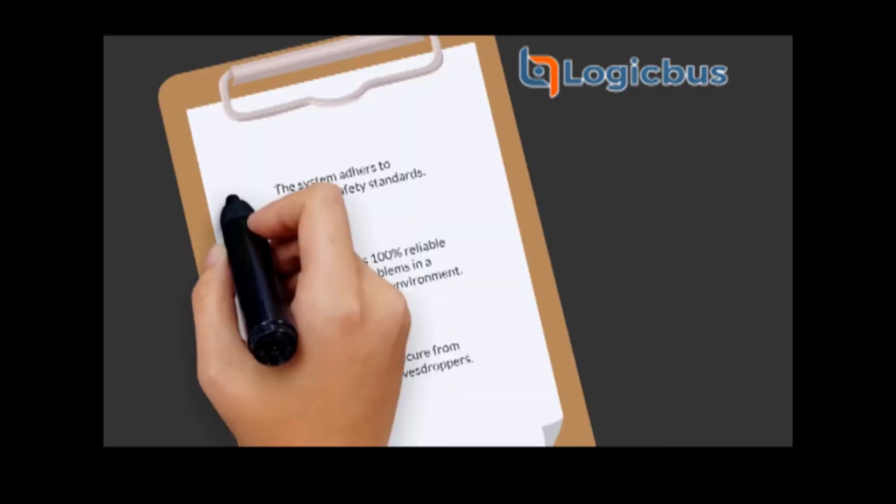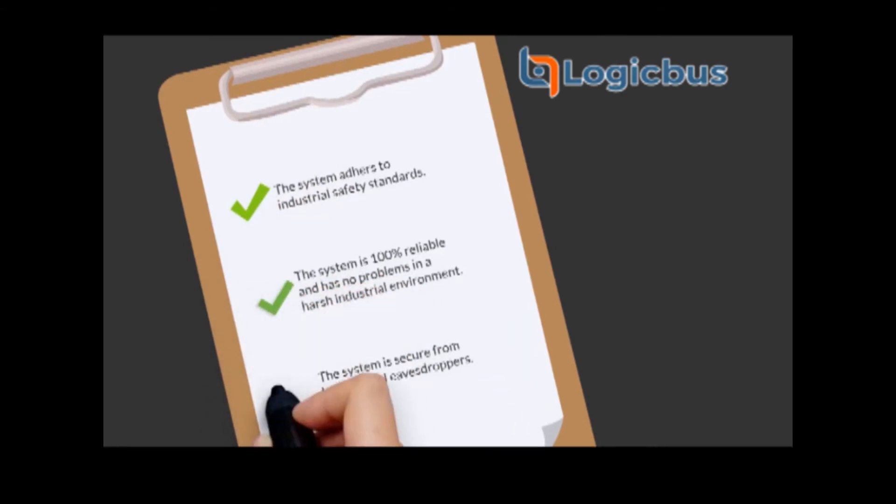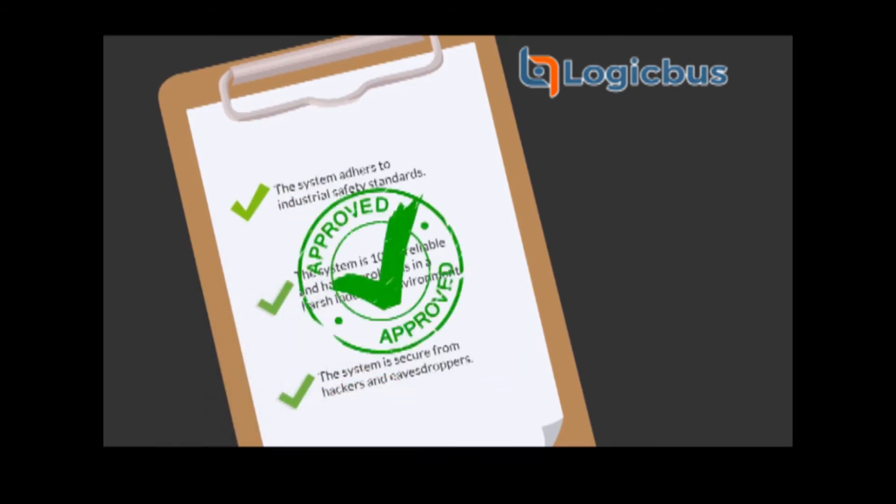The boss is pretty critical at first, but after checking it all in detail, he gives Joe the final approval to use it in their plant.